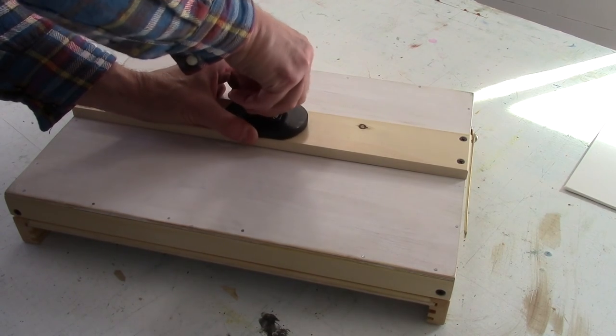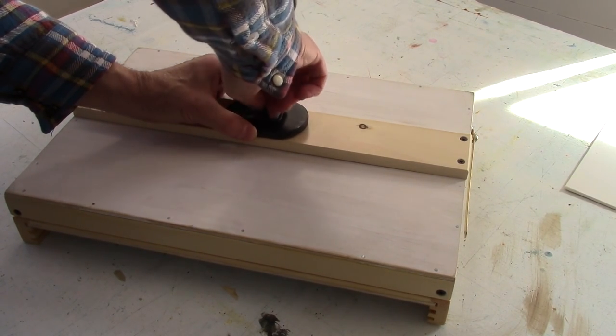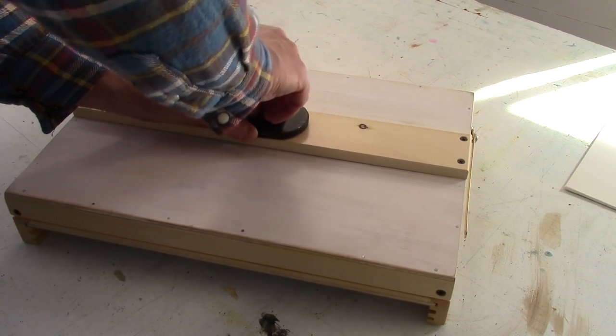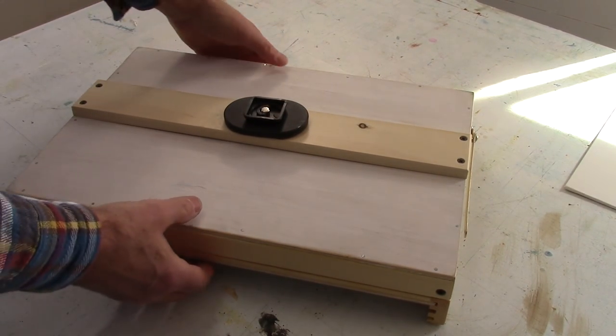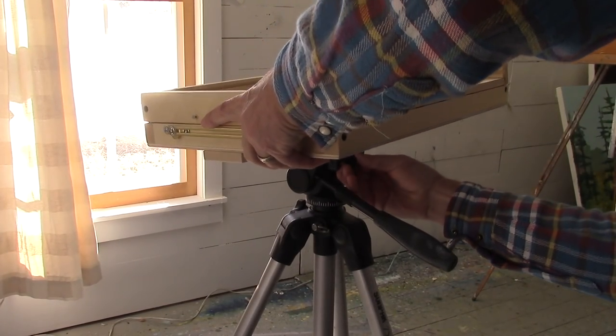All camera tripods use a standard quarter inch bolt to attach to cameras or in this case the paint box. Then the paint box can be easily attached to the tripod.